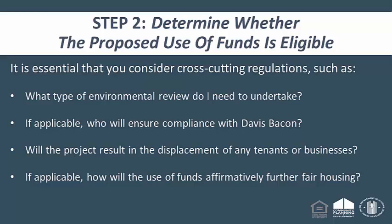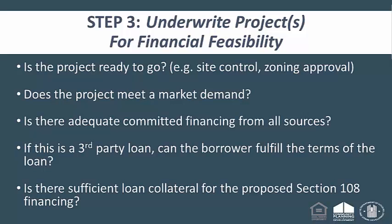Step three is underwriting the project for financial feasibility. Is your project ready? Do you have site control? Is there appropriate zoning? Is there demand for this project? Please do not build and assume they will come — do a feasibility study if needed to demonstrate that the project will be viable and successful. Section 108 funds can be used for two example types of loans: real estate loans and business loans, and HUD offers underwriting guidelines and a webinar on how to better underwrite these project types.